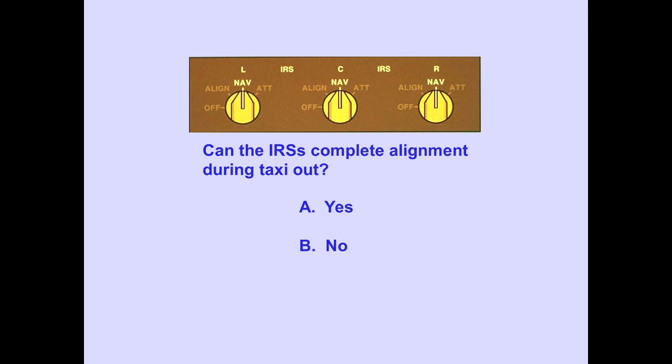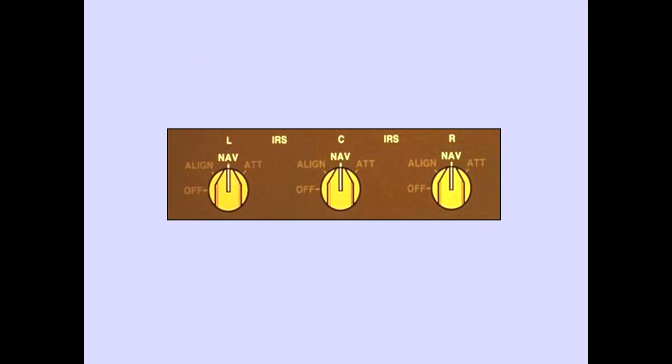Question. Answer B is correct. During alignment, it is important that the airplane remain stationary. This ensures that the Earth's rotation is the only movement detected by the IRS.